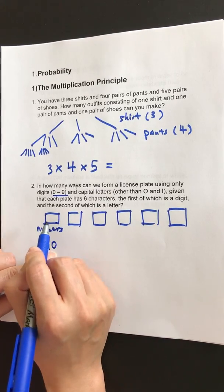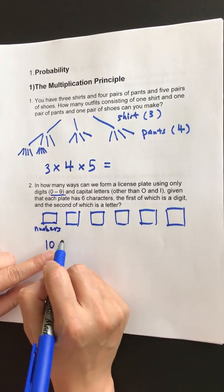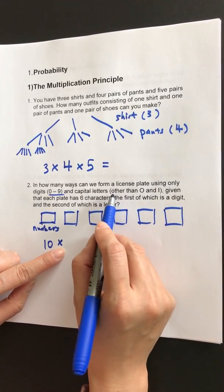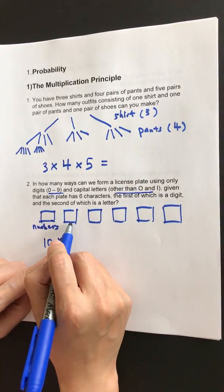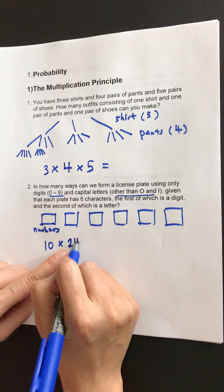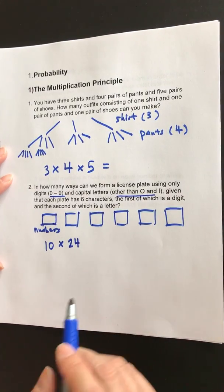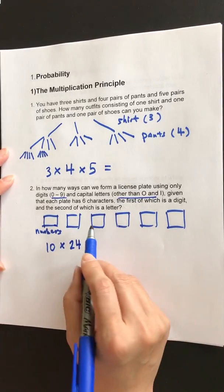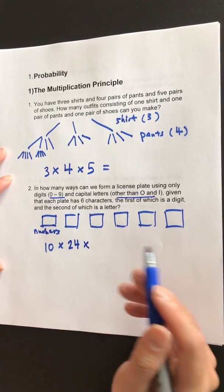So for each of the ten numbers, the second place, you will have to be a letter, but other than O and I. Okay, so this one can have only 24 options. And the rest of the numbers, there is no limit. Therefore, it can either be a digit or it could be a letter.